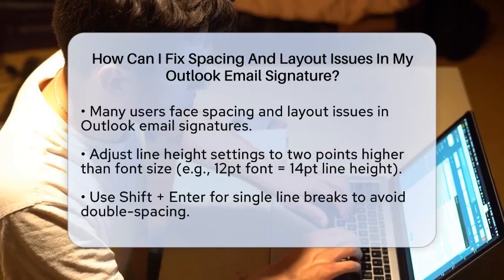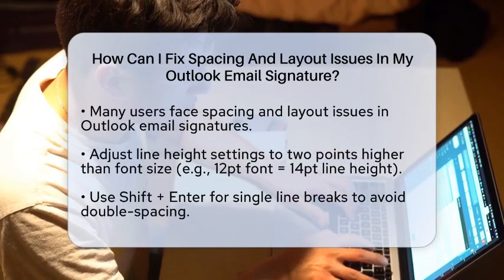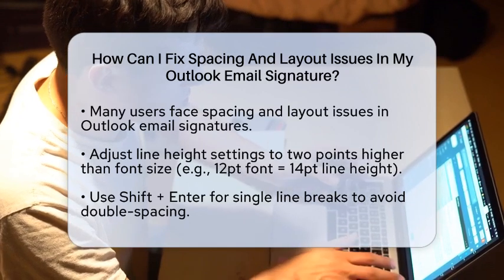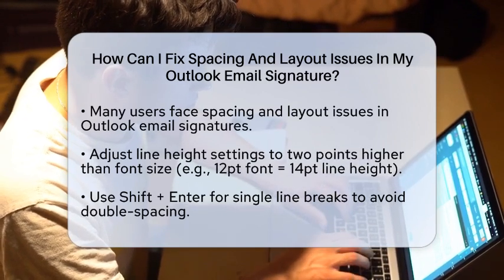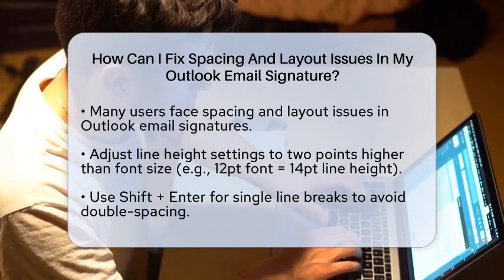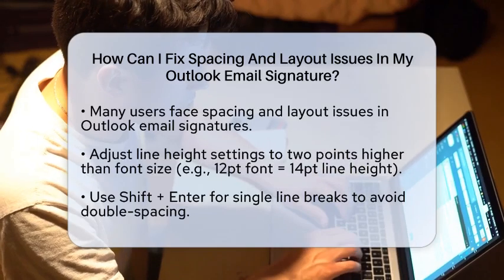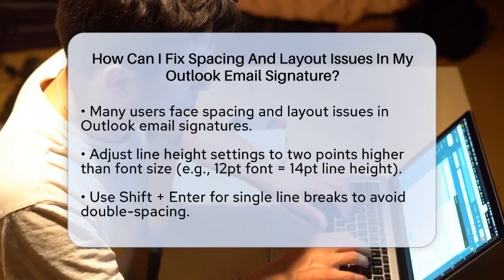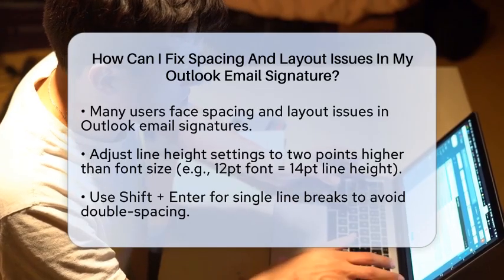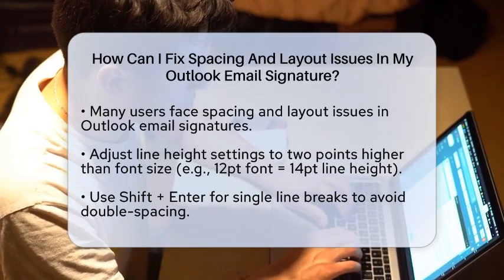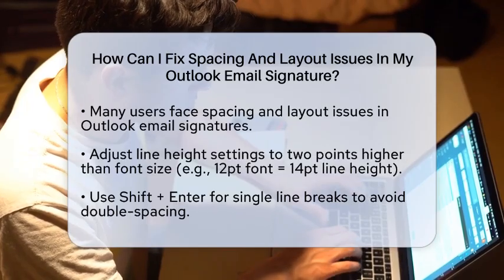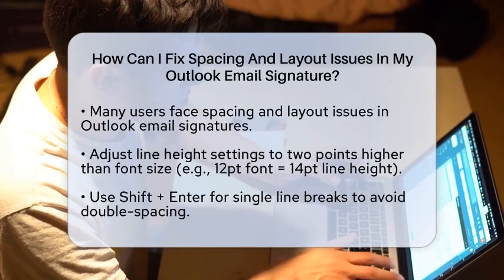First, adjusting line height settings can make a big difference. Set the line height to 2 points higher than your font size. For example, if your font size is 12 points, set the line height to 14 points. This adjustment helps prevent email clients from overriding your formatting with their default settings. You can do this in Outlook's Signature Editor or by using HTML templates.